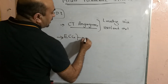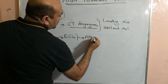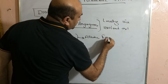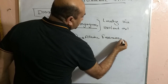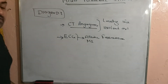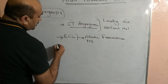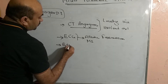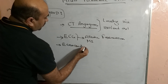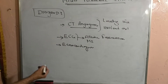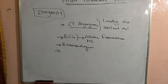An ECG should also be obtained, as these patients may have atrial fibrillation or myocardial infarction, which can itself act as a stroke mimic and cause hemodynamic instability. If facility is available, an echocardiogram can be performed within minutes to assess cardiac function.